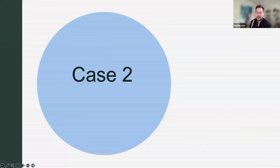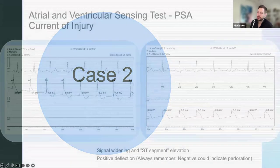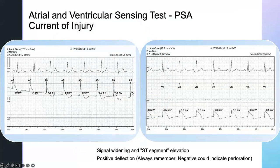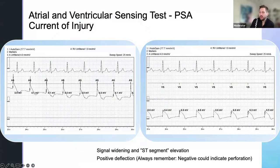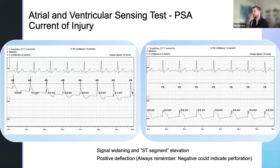Moving along to our second case — we have an atrial and ventricular sensing test on the PSA. We're looking at injury current. We have a good injury current that lines with the atrial event, a beautiful QRS, and we have our ventricular. We have a great injury current — sensing wasn't quite as good as before, but we still have decent sensing for the RV. The sensing is great in the RA. You have good injury current on both. It's positive for both.